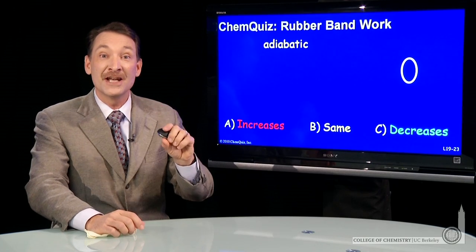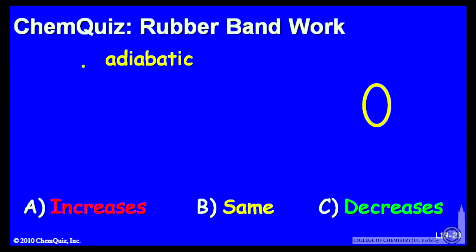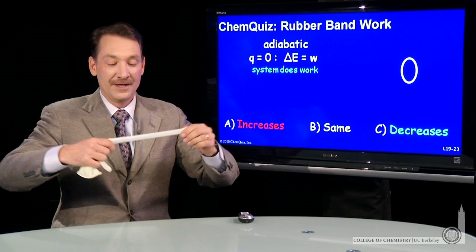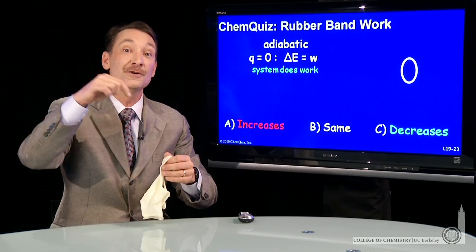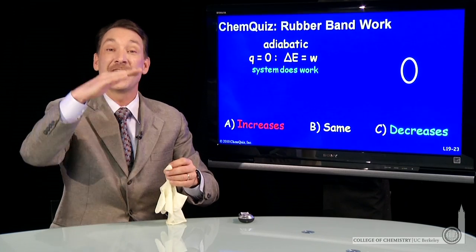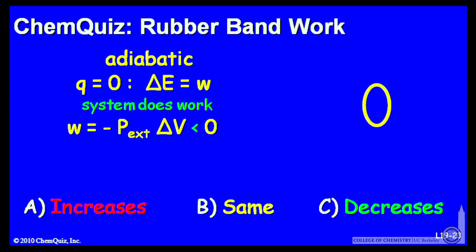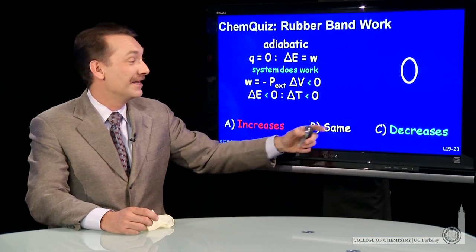It's an adiabatic change, and we arrange for it to be adiabatic simply by doing it quickly — there's no time for heat to flow, so no heat flow. The energy and the work have to be the same; the change in energy is equal to the work. In this case, the system does work — the rubber has to pull my hands back together. A system that does work uses its internal energy to do the work, so the energy must go down. The work is negative, delta E is negative, and delta T is negative, so the temperature goes down — it decreases.